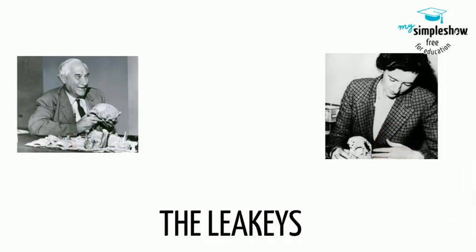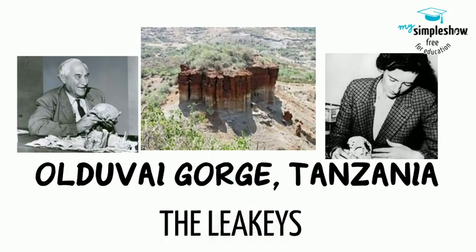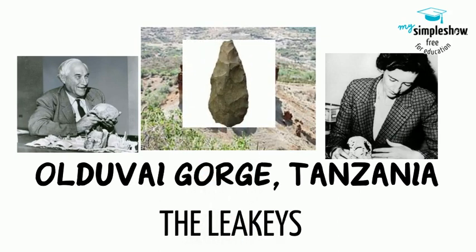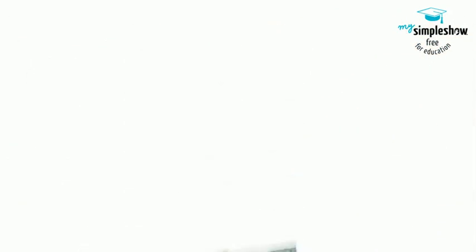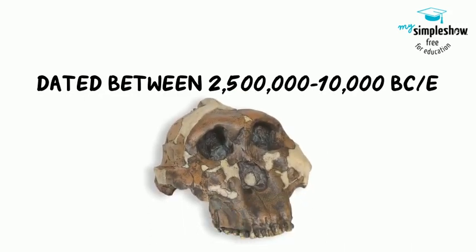Anthropologists Lewis and Mary Leakey set out in the 1930s to discover the origin of human history in the Olduvai Gorge in Tanzania. In the gorge, they found tools that were shaped into jagged edges. The use of stone tools for human survival gives this era its name of the Paleolithic Age, or Old Stone Age. It is commonly accepted in the scientific community that the dates of the Old Stone Age range between 2.5 million to 10,000 BC.